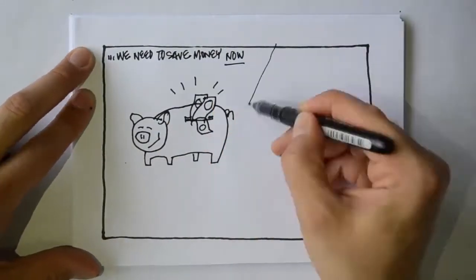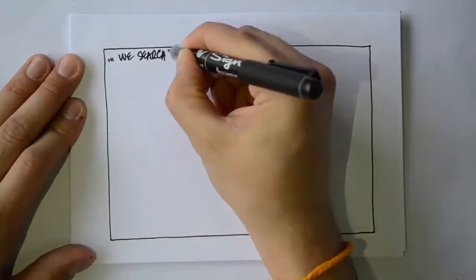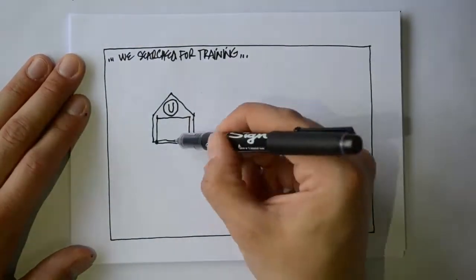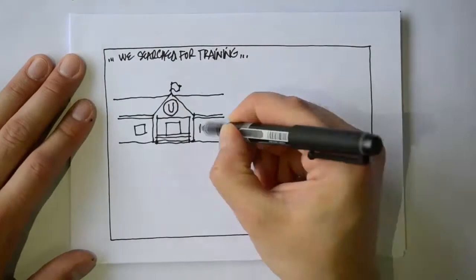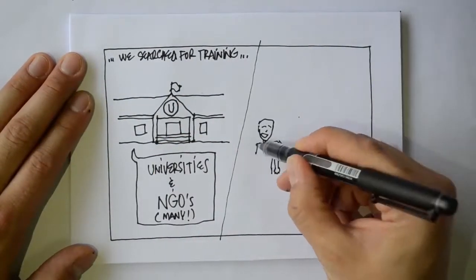The community leader knew it was important to start saving again, but didn't feel she had the skills to manage the accounting. The community began to search for training. The municipality should help us with the skills. There are so many universities and NGOs that should be able to help.